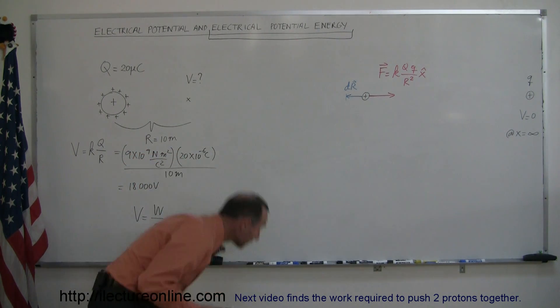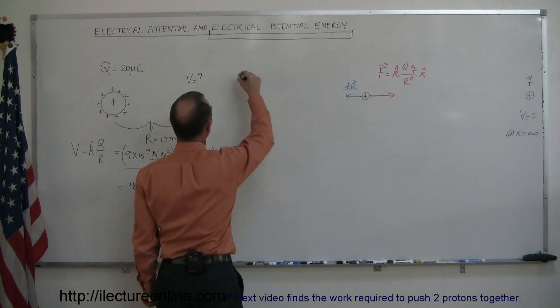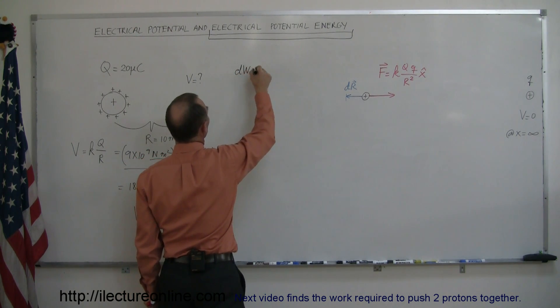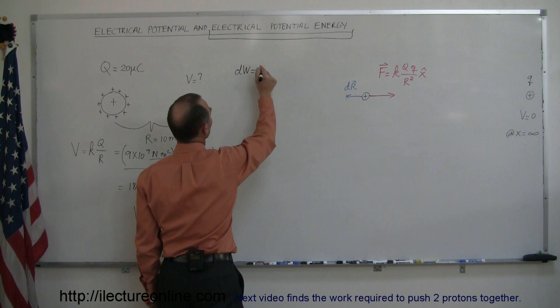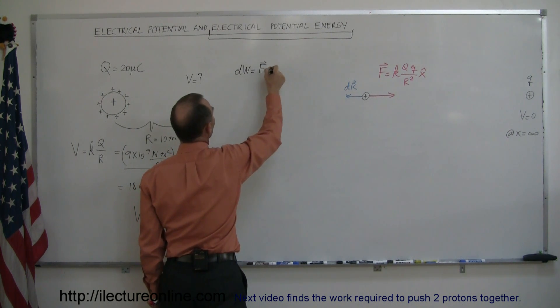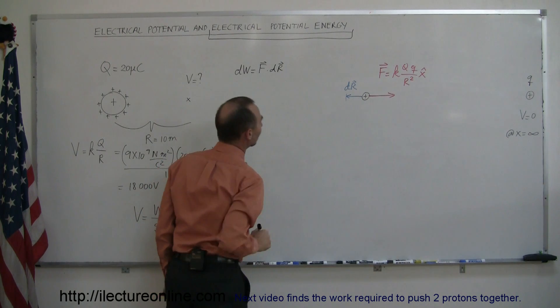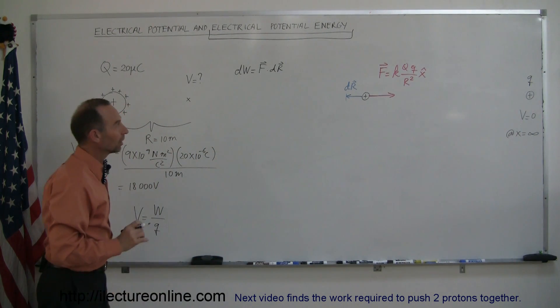Let's call that little bit of work that we did a little dw. We did dw amount of work, and that is equal to the force F dot dr, the amount of distance that we covered over that small little interval.